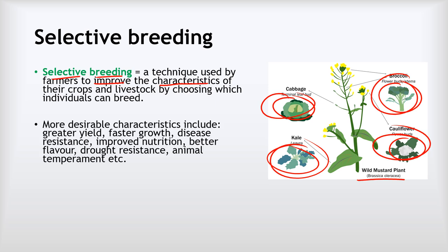We do selective breeding in order to improve the characteristics to make them more desirable. You need to be specific about this in an exam depending on the context. It might be about having a greater yield — growing more food from the same plant. It might be about growing faster, being resistant to disease, being more nutritious, having a better flavour, being drought resistant, or — particularly when selectively breeding animals — improving their temperament, like making a dog less aggressive.